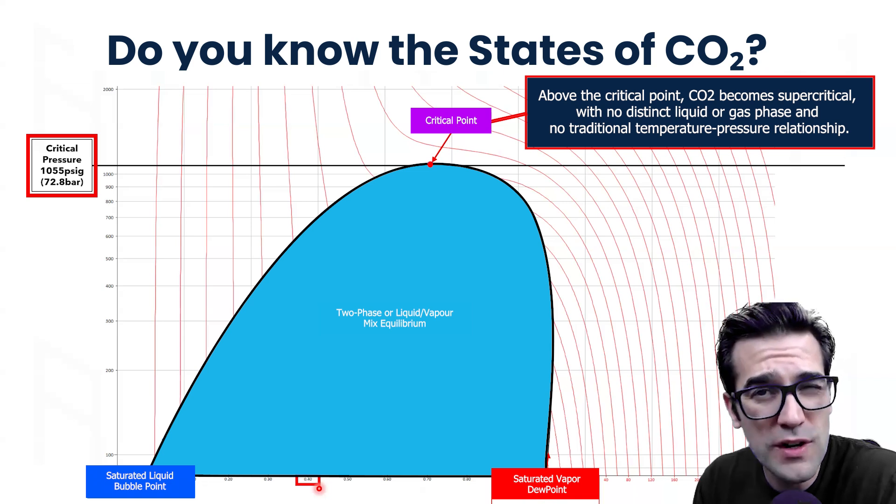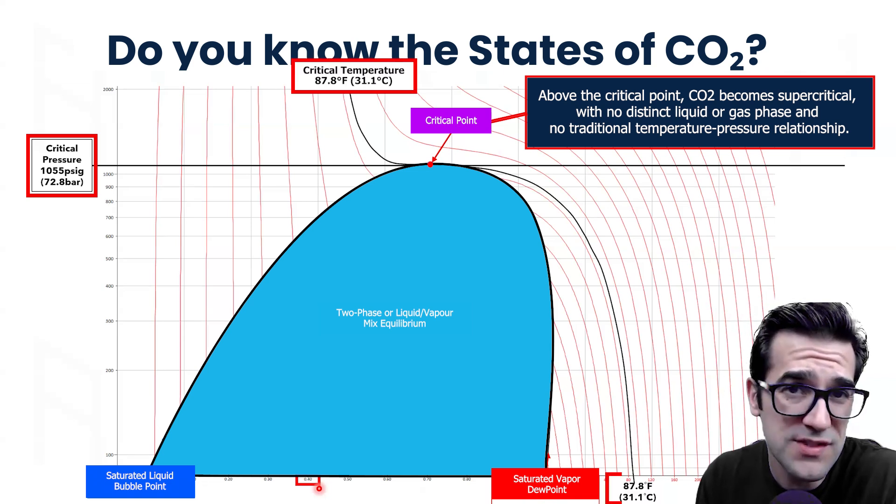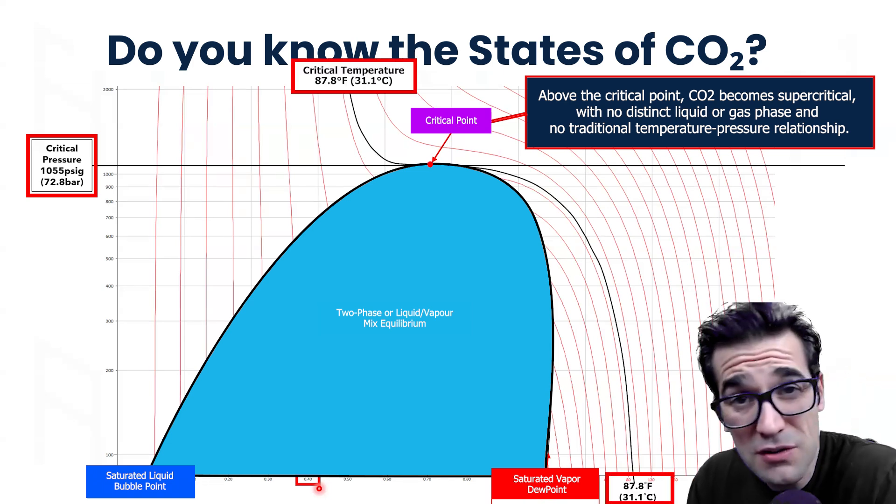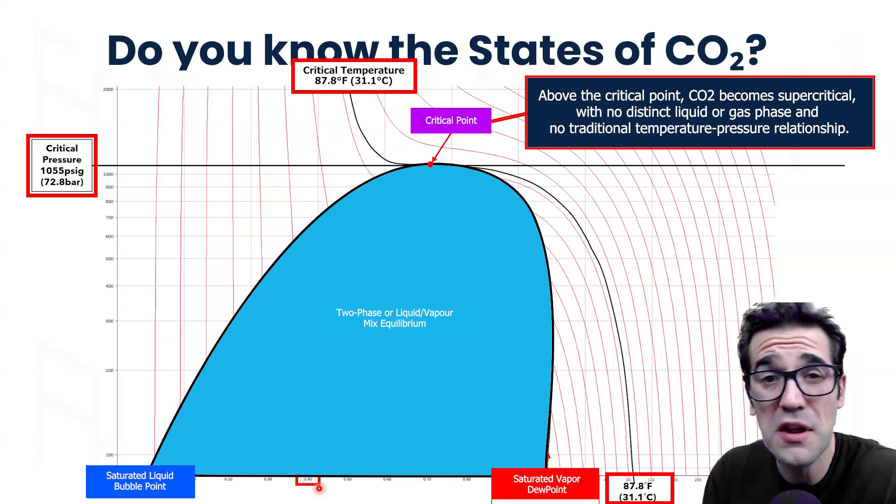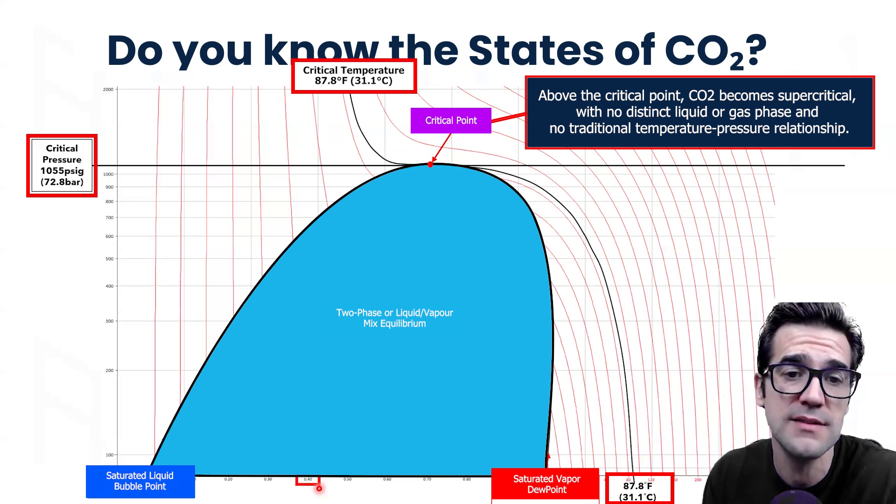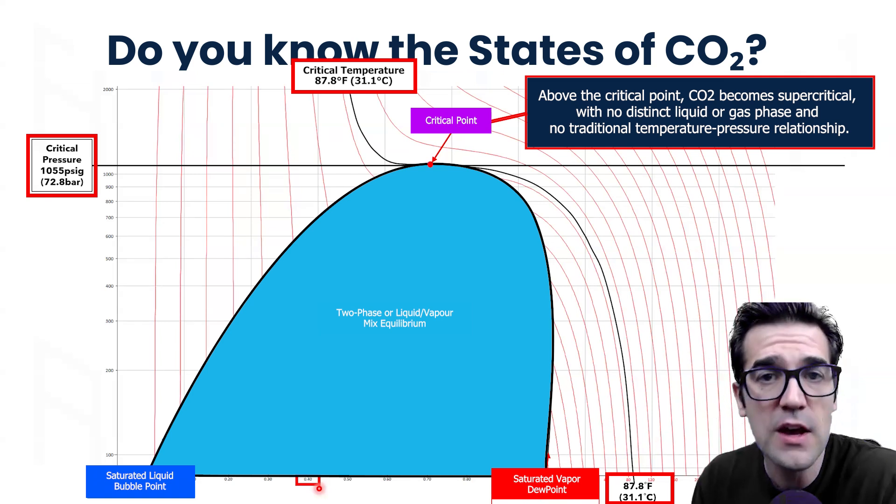Next thing to know is the critical temperature. The critical temperature of CO2 is 87.8 degrees Fahrenheit or 31.1 degrees Celsius. When you're above that, you're above the critical point.